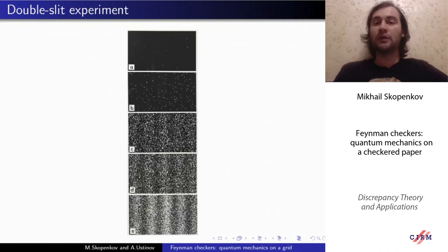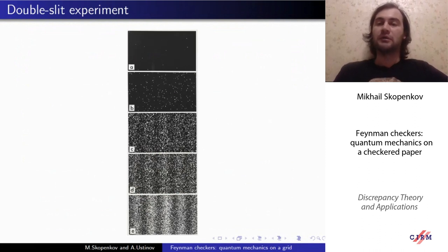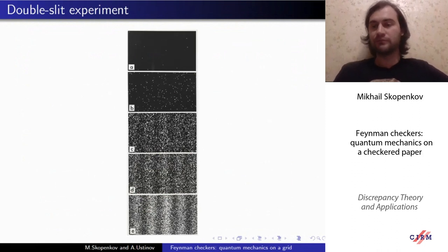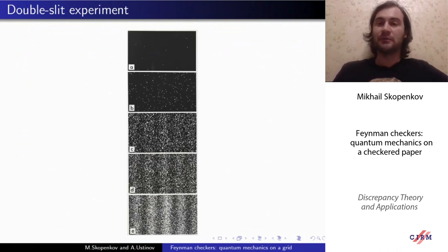So we see that one cannot at all predict where a particular electron hits the screen. The only quantity we can compute is the probability that the electron hits the screen in a given region. This so-called interferogram shows that at the brighter regions the probability to find the electron is larger, and in the darker regions the probability is smaller.